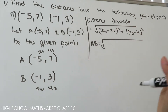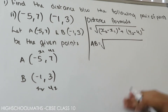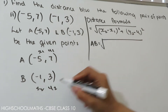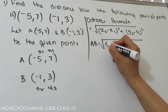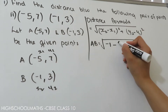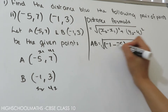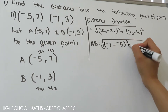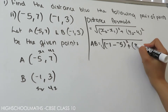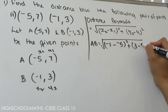Substituting: x2 is minus 1, minus x1 which is minus 5, the whole square, plus y2 which is minus 3, minus y1 which is 7, the whole square. Now for the important rule: minus 1 minus minus 5. The minus and minus becomes plus, so minus 1 plus 5 equals 4.